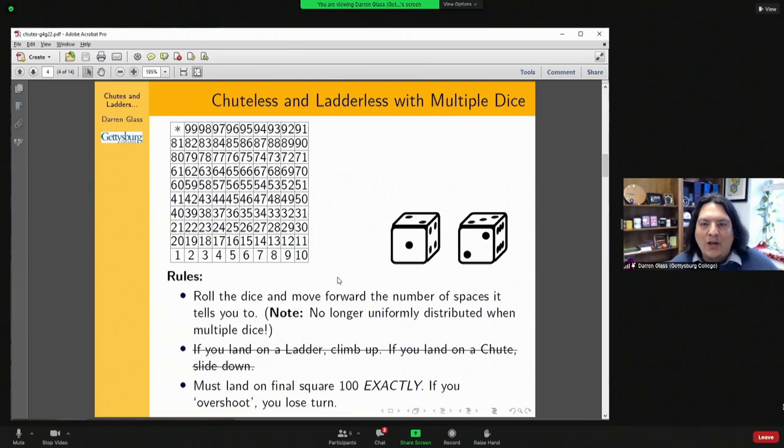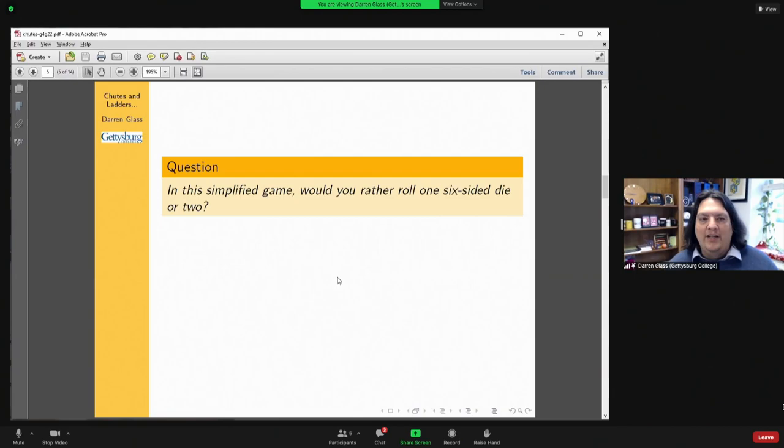After that talk, Steven and I started working on what happens if instead of one spinner where it's uniformly distributed, you instead roll multiple dice. In that case, it's a similar game but now your numbers aren't uniformly distributed. Of course, if you roll two dice you aren't going to get a one. So if you land on square 99, you're stuck, you're never going to get that one that you need to get to 100. So you'll be stuck forever. In this simplified game, the question is: would you rather roll one six-sided die or two?